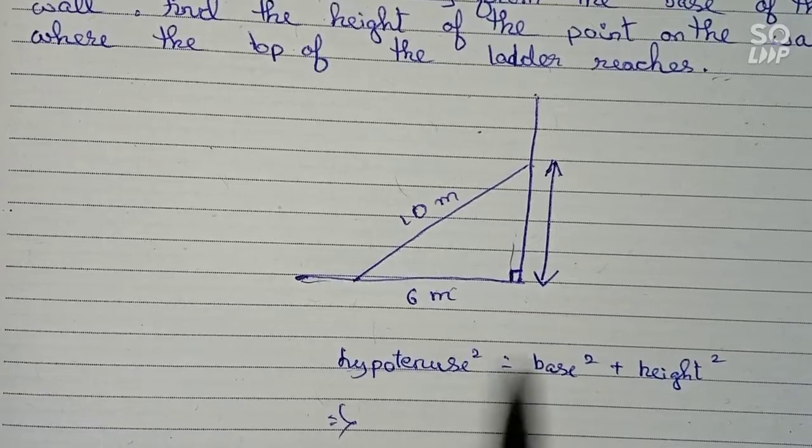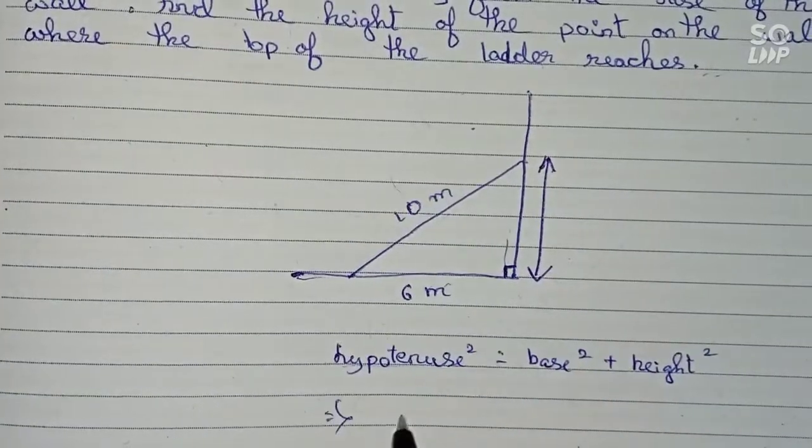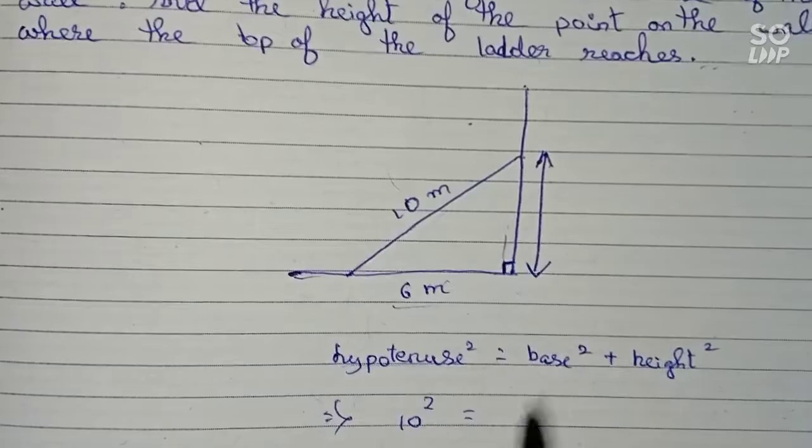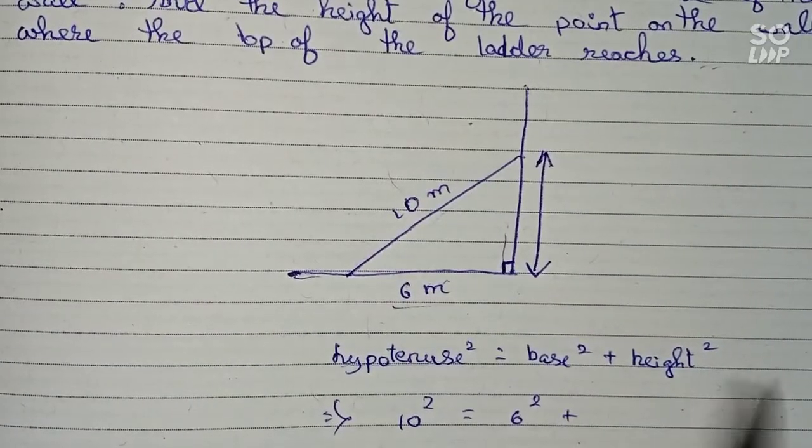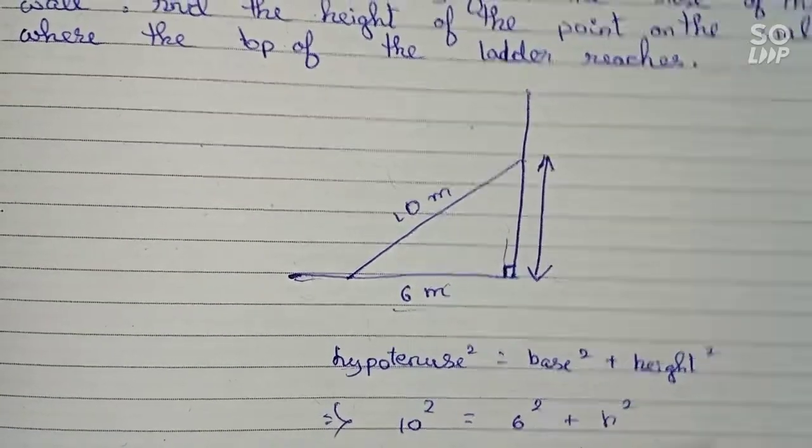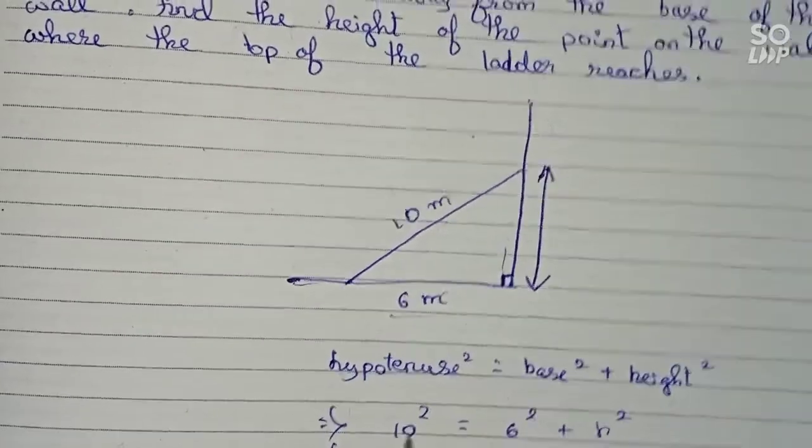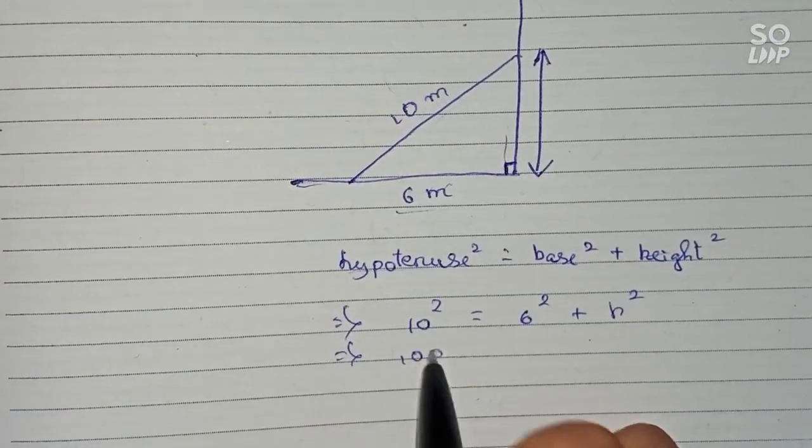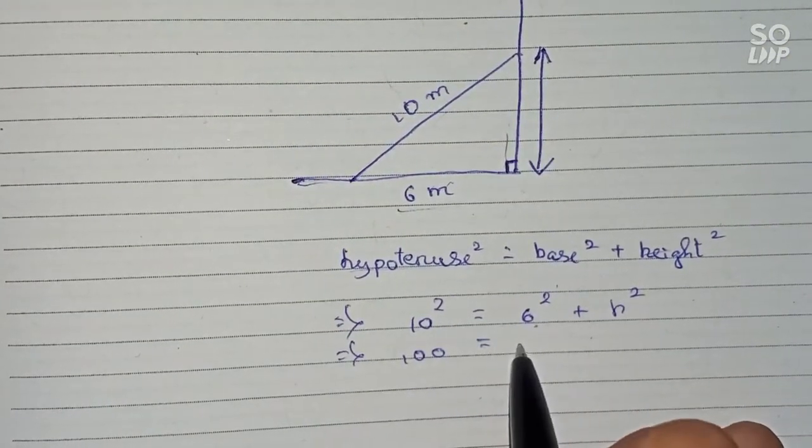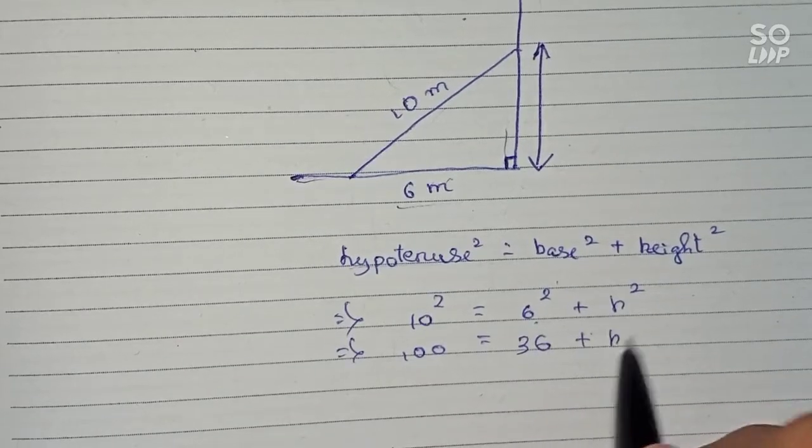So here the hypotenuse is 10 meters. Therefore, 10 squared is equal to base, which is 6 meters, so 6 squared plus height squared. So 10 to the power 2 will be 100, is equal to 6 to the power 2, which is 36, plus h to the power 2.